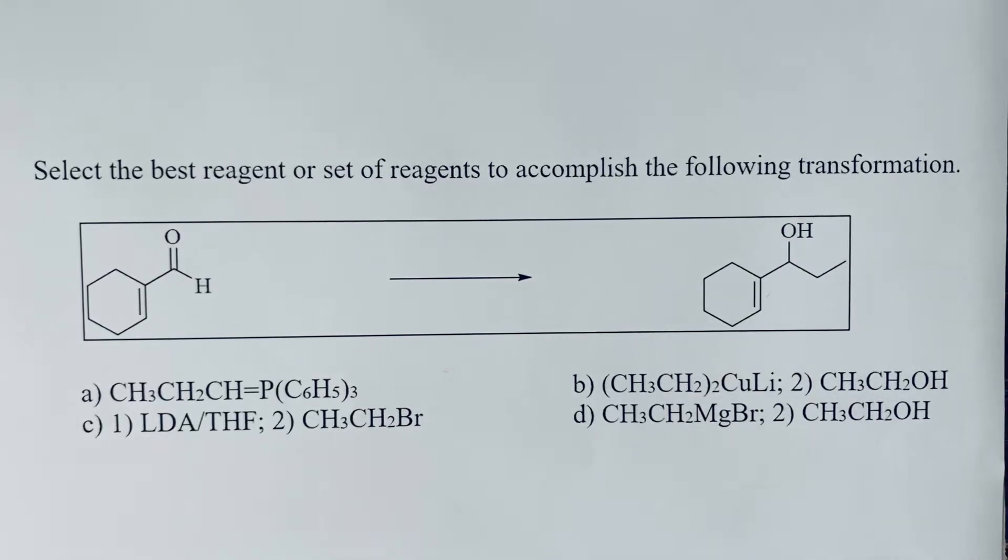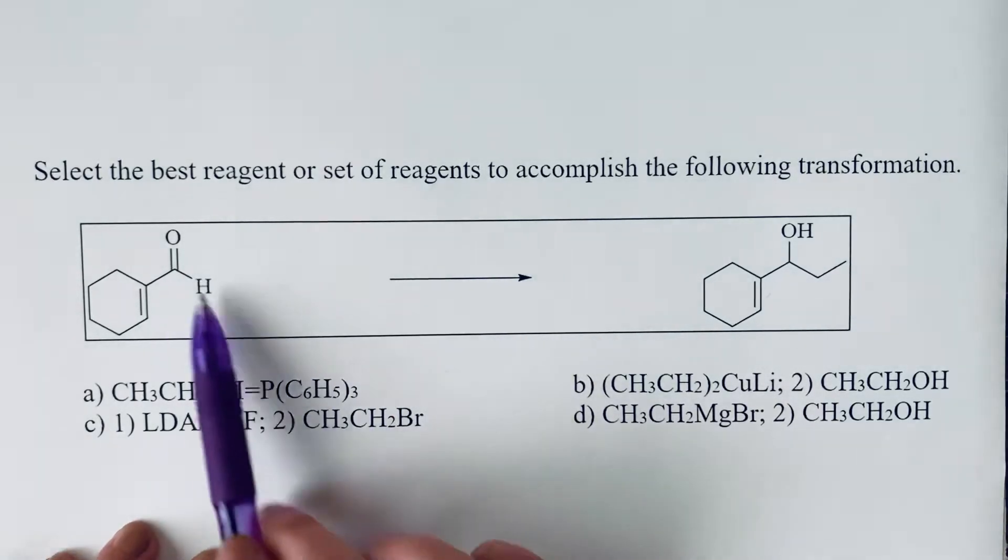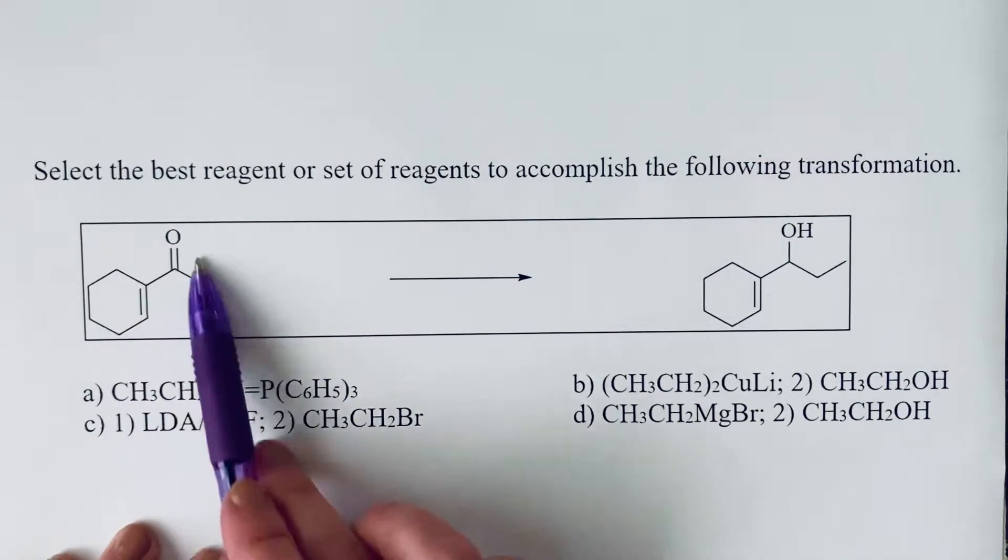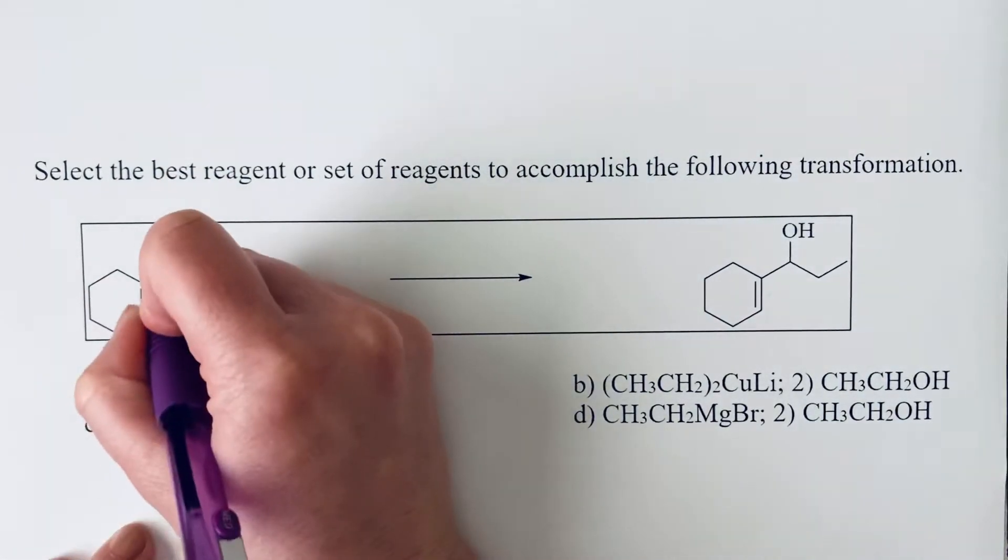Select the best reagent or set of reagents to accomplish the following transformation. If we take a look at our starting material, we see that we have an aldehyde and an alkene. This alkene is conjugated with the aldehyde.